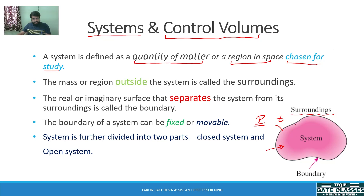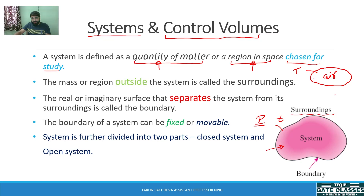So it is clear what a system is — it can be a matter or a region in space. Suppose there is a region where some air is present and I want to know the temperature of that quantity of air in that space. Then my system is that air, and the boundary separates it from the surrounding. Now, the system is further divided into two parts: one is closed system and the other is open system.